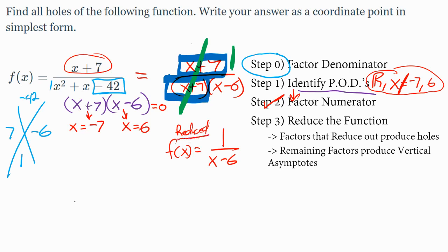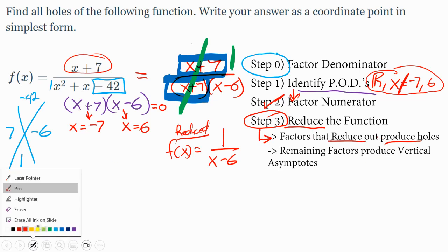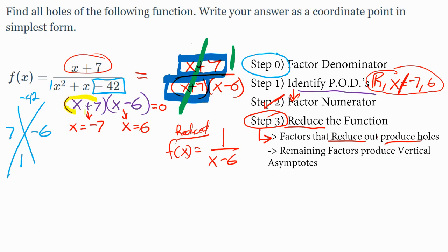Now, what we do is look at our step 3 that says after we've reduced the function, we can sort. Anything that reduced out produces a hole. Well, what we do is go back and pay attention to this x plus 7 right here is what got reduced out, and it caused a point of discontinuity of negative 7.